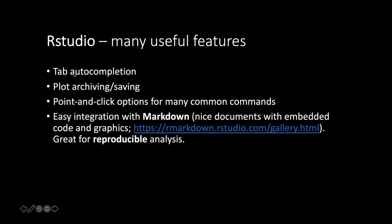One really important feature is tab auto-completion. You can start typing something, hit tab, and it will search for things matching what you've typed to help you finish it. This is really important when you're learning to code because a big issue is just remembering the name of a function, the specific way it's spelled, or whether the author used periods or underscores. If you can start typing and hit tab to see your options, that's really helpful.